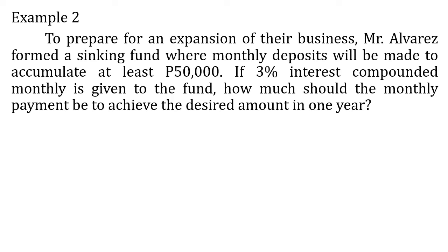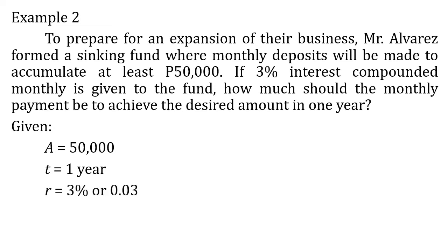Example two: To prepare for an expansion of their business, Mr. Alvarez formed a sinking fund where monthly deposits will be made to accumulate at least 50,000 pesos. If three percent interest compounded monthly is given to the fund, how much should the monthly payment be to achieve the desired amount in one year? The given: future value is 50,000 pesos, time is one year, rate is three percent or 0.03, and the compounding period is monthly so m equals 12. We are going to solve for the monthly sinking fund payments.